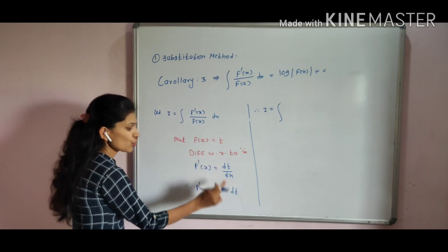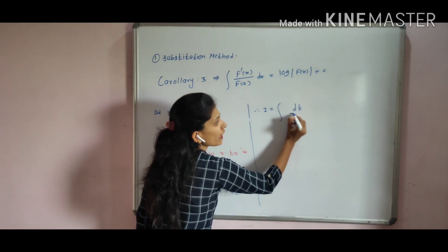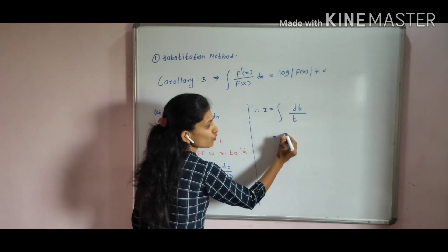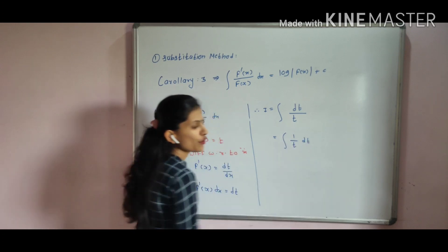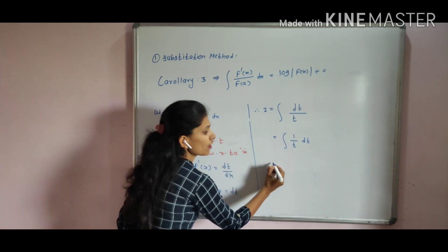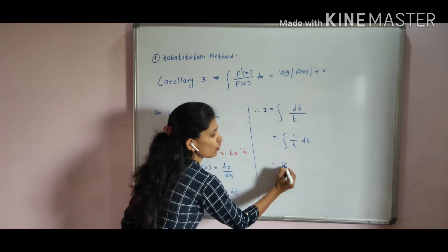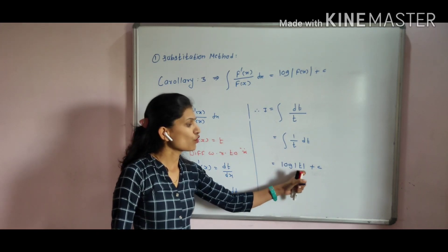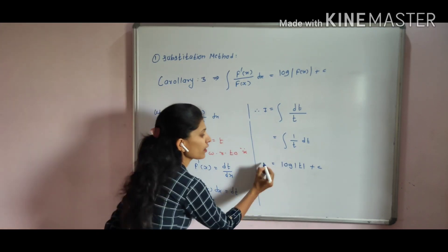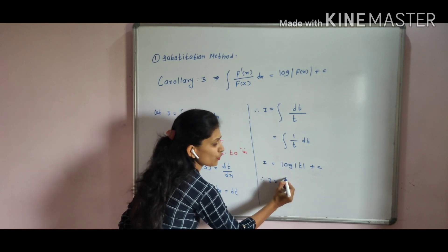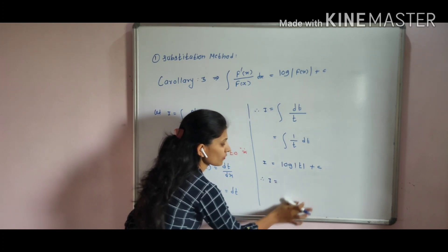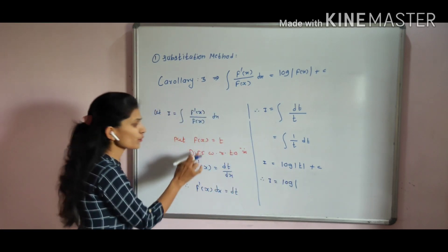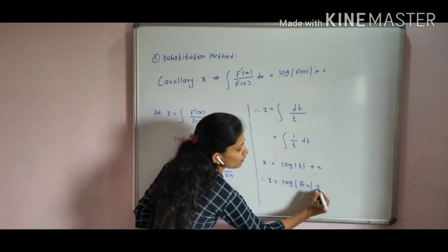Therefore I equals the integration of f dash x dx upon f of x, which becomes the integration of dt upon t, which is the integration of 1 upon t. Now, the integration of 1 upon t is log of mod t plus c. Therefore I equals log of mod t plus c, and substituting back, t equals f of x, so I equals log of mod f of x plus c.